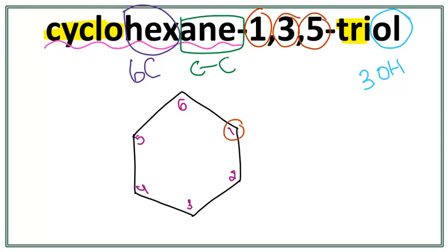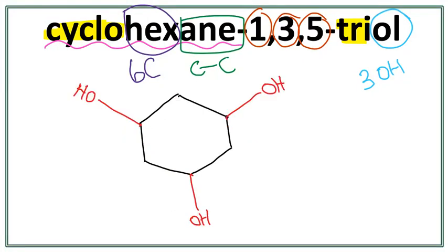So we have an OH here, an OH here, and an OH here. Let's get rid of these numbers and attach the hydroxyl groups on the first, third, and fifth carbons. So this is the structure for cyclohexane-1-3-5-triol.